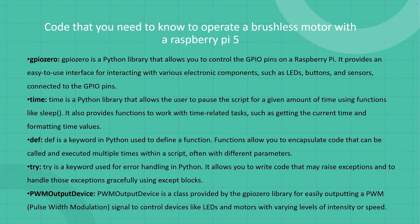Now some code that you're going to want to know before you actually start writing some for yourself. First of all, we're going to be using GPIO0. That's what we're using to output that PWM signal. We're also going to be using time because we want to have some delays in there. You can see DEF down here. This is just a keyword in Python used to define a function. Functions allow you to encapsulate code that can be called and executed multiple times within a script, often with different parameters.